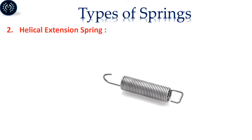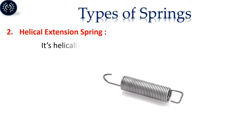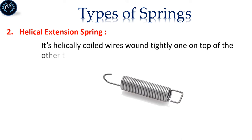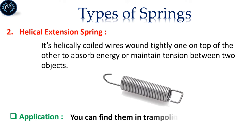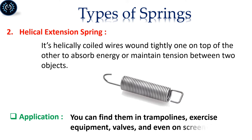Helical Extension Spring: It's helically coiled wire wound tightly one on top of the other to absorb energy or maintain tension between two objects. You can find them in trampolines, exercise equipment, valves, and even on screen doors.